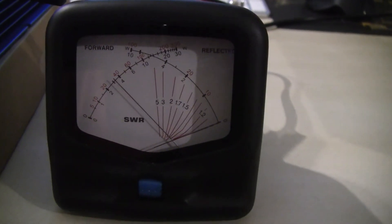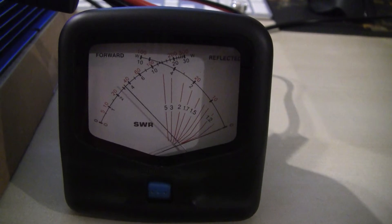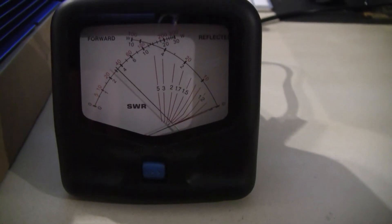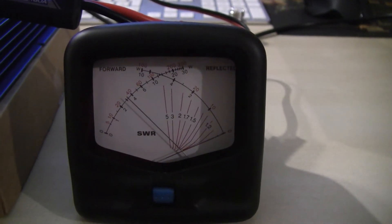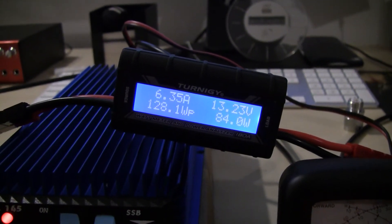So this SWR meter has two settings for low and high power, I think it's 30 and 300 watts. So we have now with half a watt of input power, about 30 watts of output power at 6.35 amps.